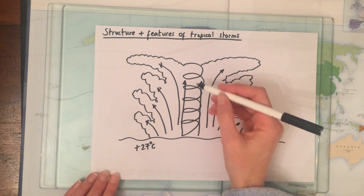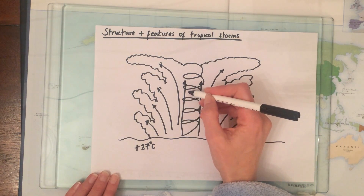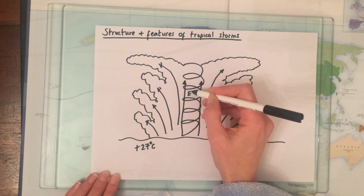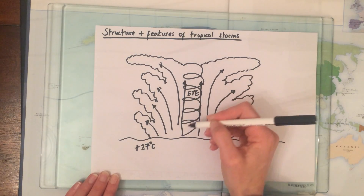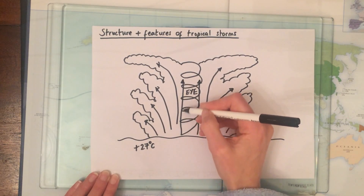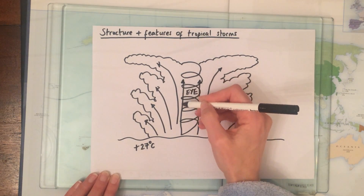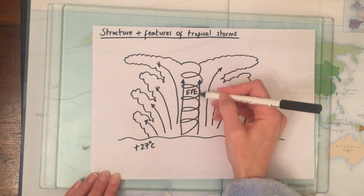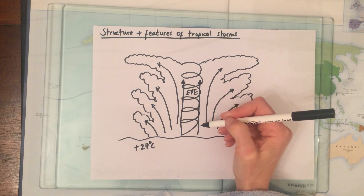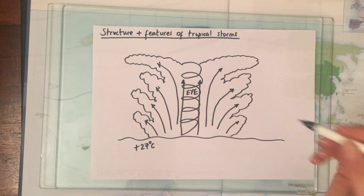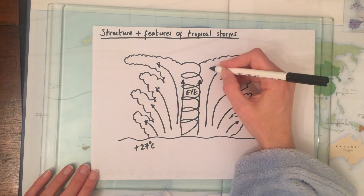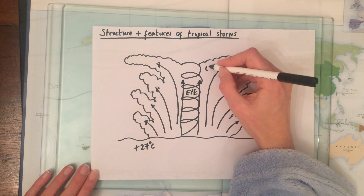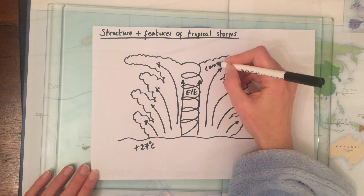In the centre of the storm we have the eye. The strongest wind speeds are in the eye wall on either side. That's part of the structure too, and we've also got these deep cumulonimbus clouds.